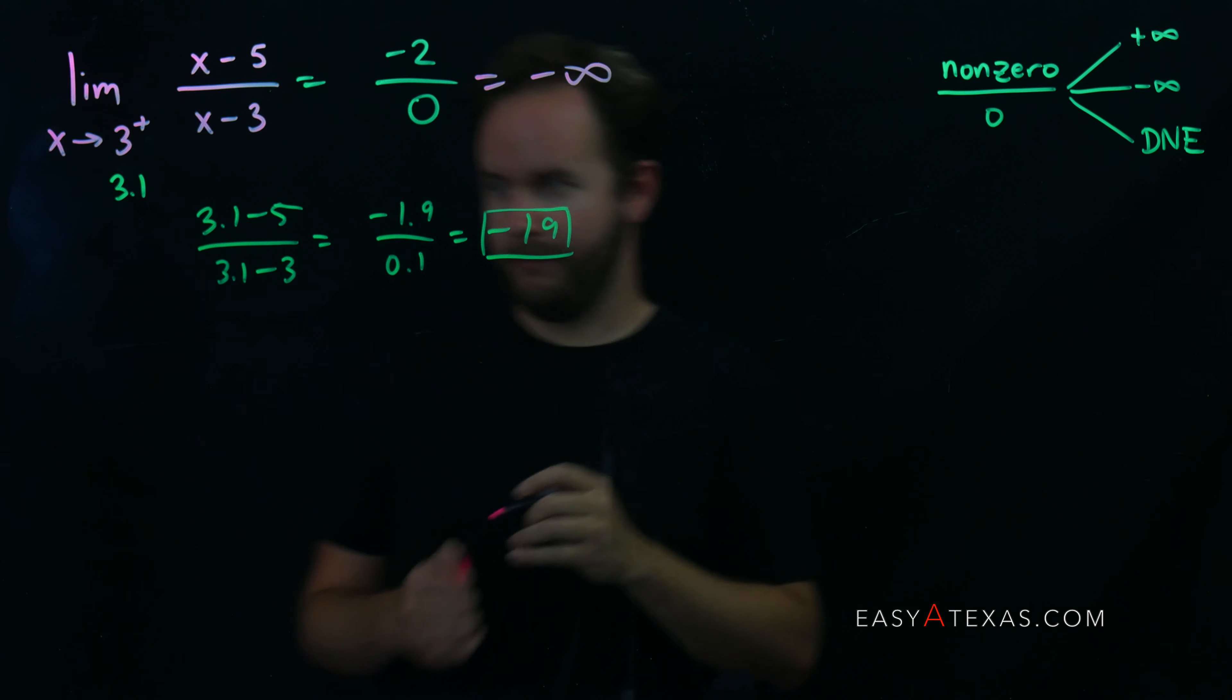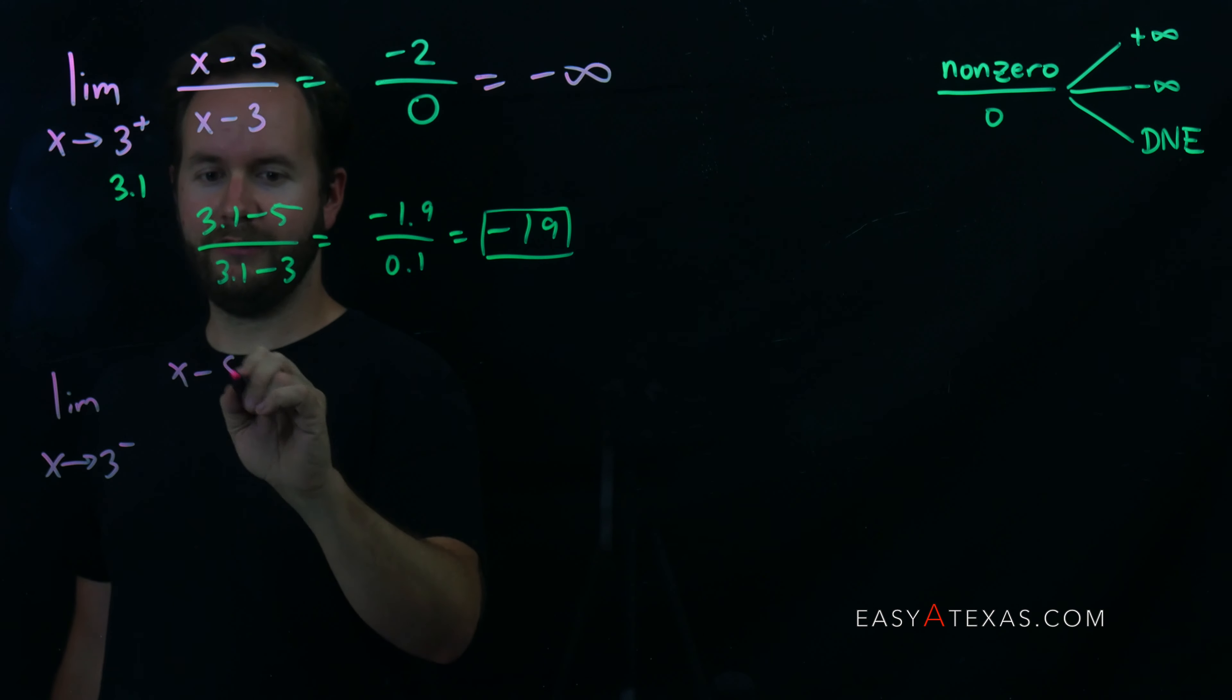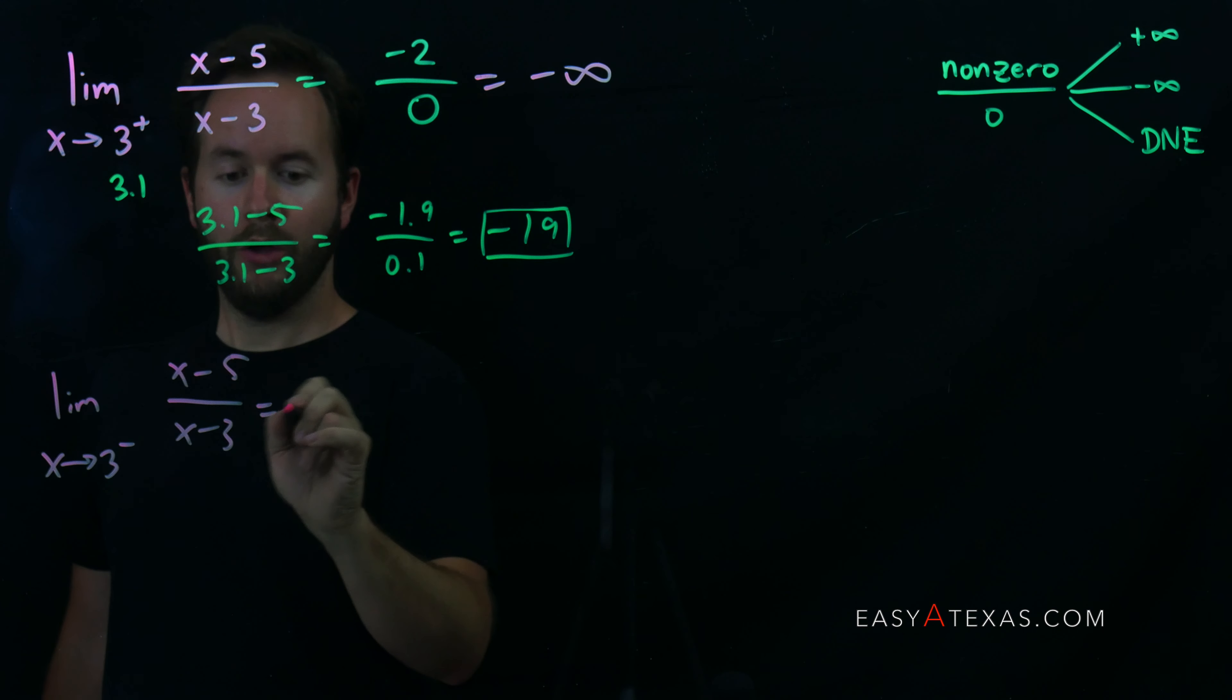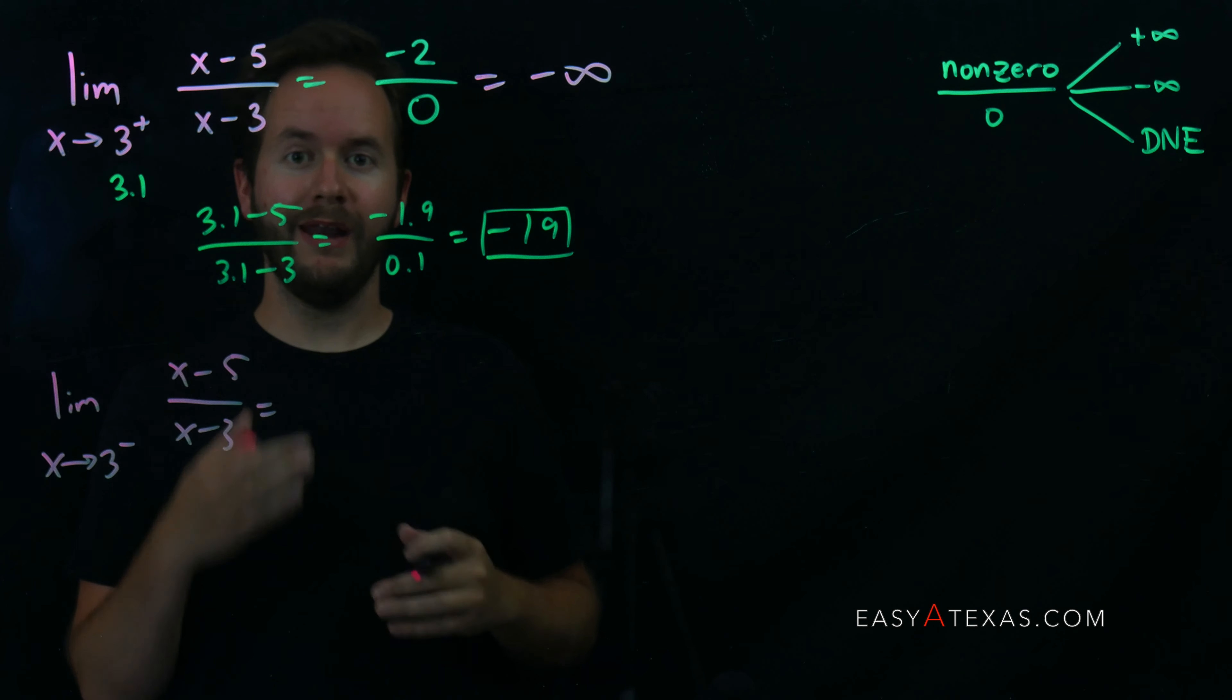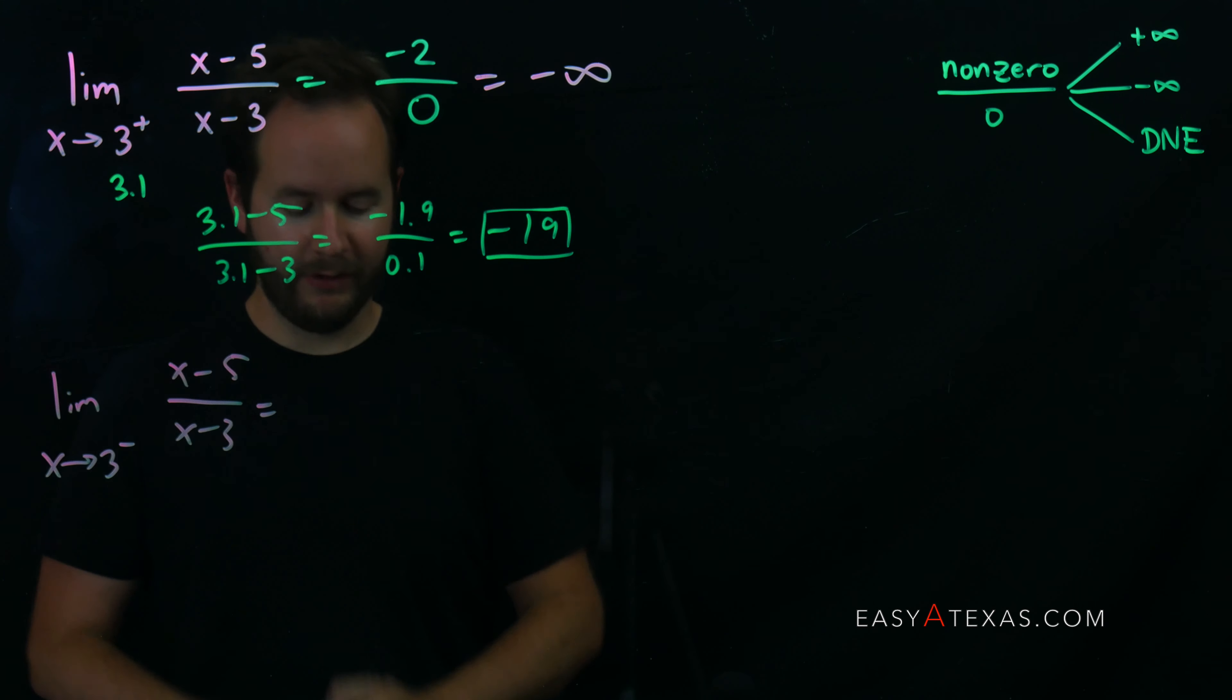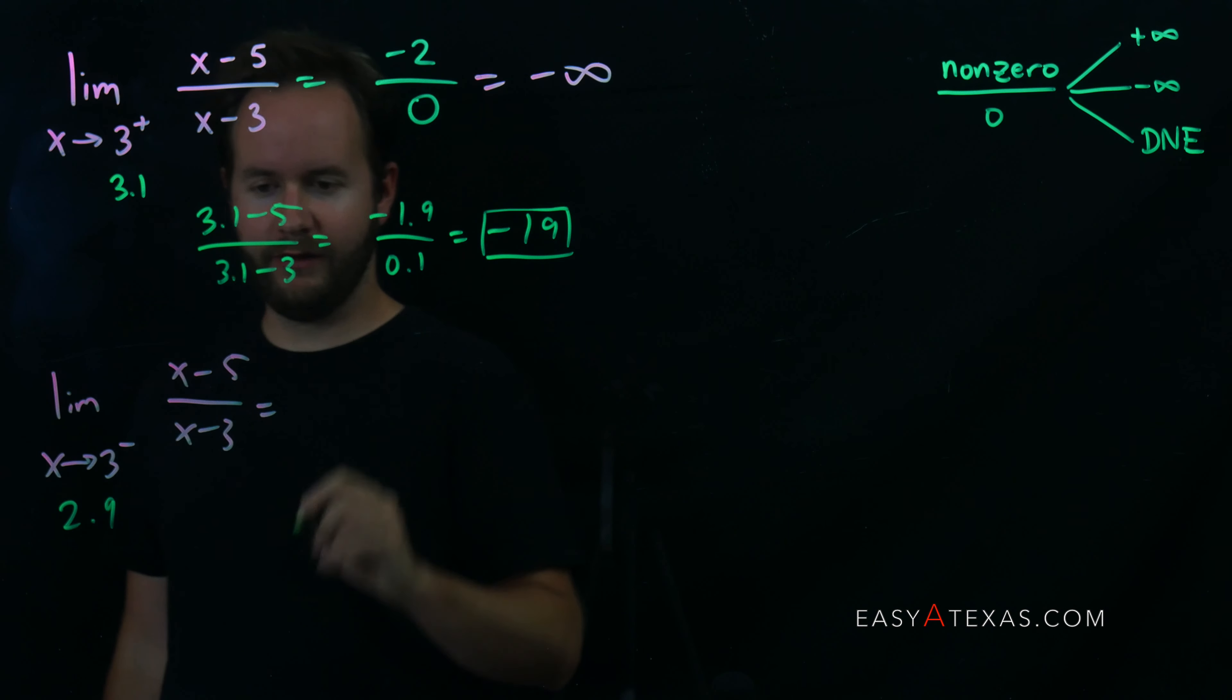Let's flip the script a bit. Let's change this to be limit as x approaches 3 from the left of x minus 5 over x minus 3. Once again, you'll plug in x equals 3 and you'll still get negative 2 over 0, but now we're approaching 3 from the left. 3 from the left, well, that's a number like 2.9. We're going to say 2.9, we're going to plug into this.